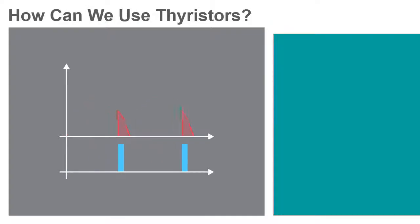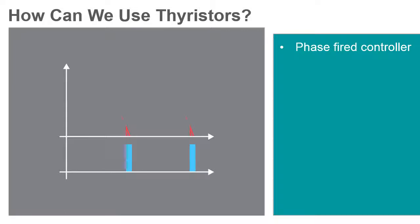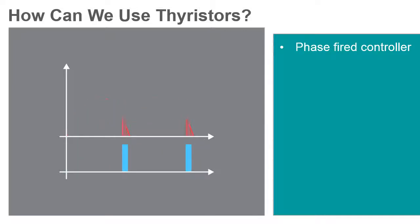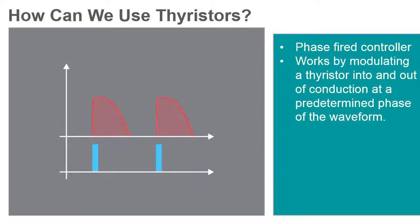Thyristors have a number of different power control uses. One such use is in phase-fired controllers. Phase control is a method of pulse width modulation applied to AC voltages. It works by modulating a thyristor into and out of conduction at a predetermined phase of the applied waveform.